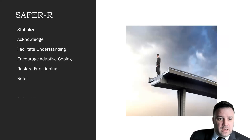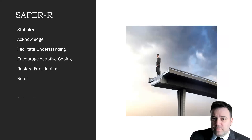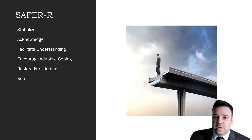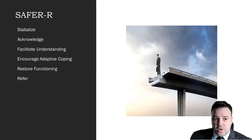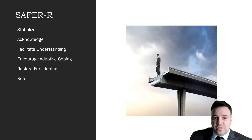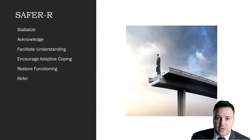Another model that crisis interventionists use is called SAFER-R, and it's very similar to ACT. You have the process of stabilizing the situation, acknowledging the problem, facilitating understanding, encouraging adaptive coping strategies, and restoring functioning after that. The final R stands for referring to a professional or being seen again later. So these are all the same principles we see in crisis intervention.